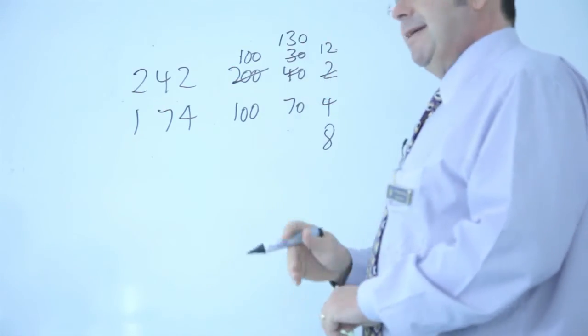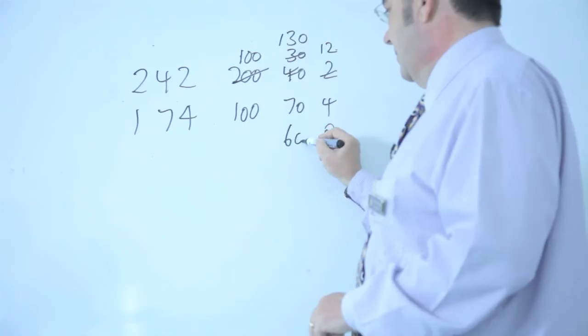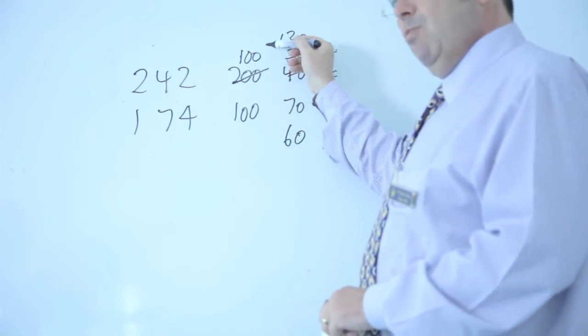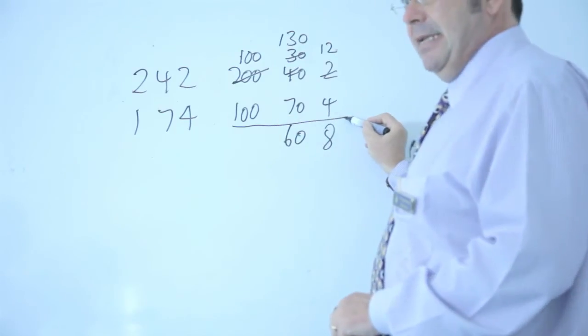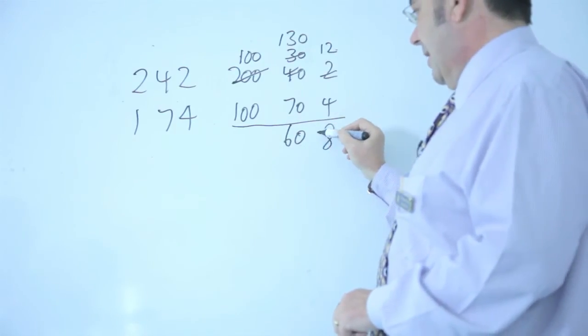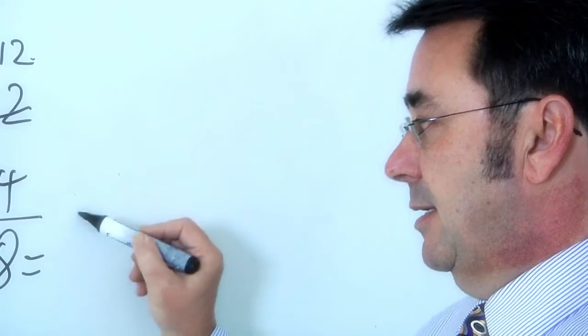130 now, take away 70, that gives me 60. Over to my hundreds, 100 minus 100 is nothing. So I don't need to put anything down there. So 60 add 8 becomes 68.